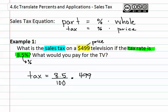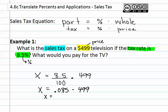Remember that if you do not know something, you can write this as your variable x. We now have x equals 8.5 divided by 100 times 499. It is helpful to turn your fraction into a decimal, giving you x equals 0.085 times 499. You can now multiply these to get that x, or the tax, equals $42.415, which we round to $42.42.